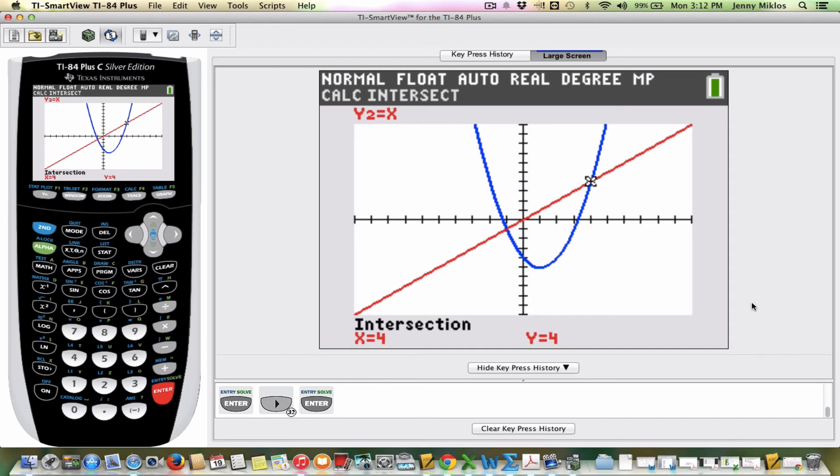And it tells me that that point of intersection is 4, 4. Okay, so that is how we go about doing these. Now a few quick reminders on graphs.